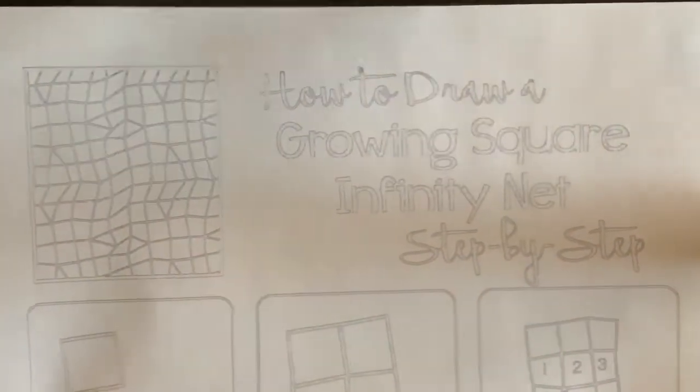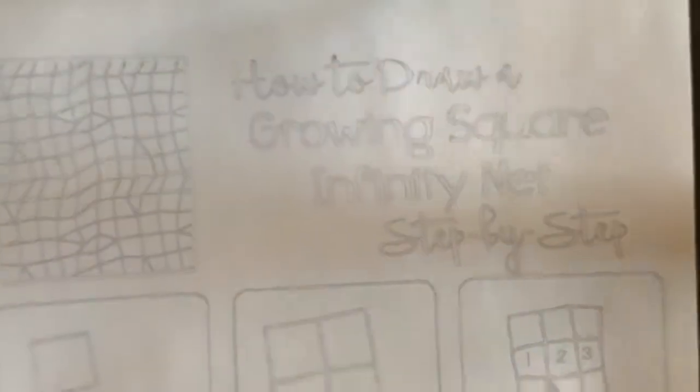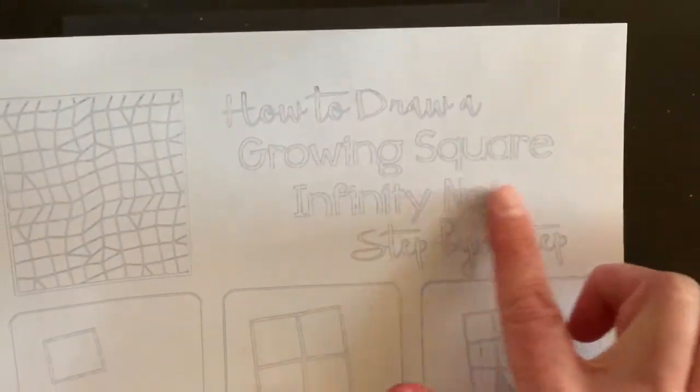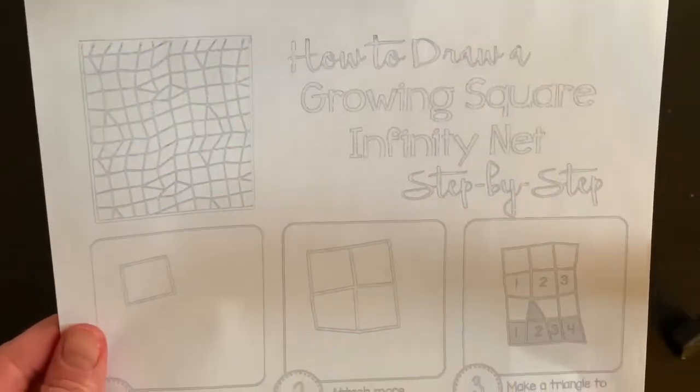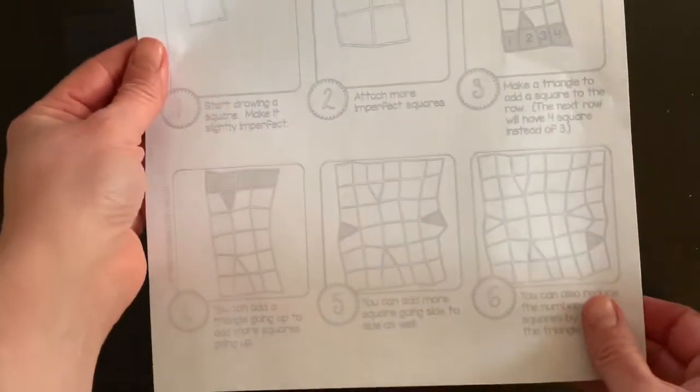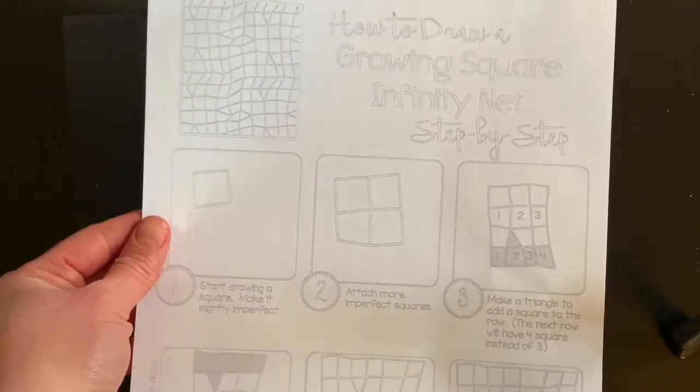This is how I draw the Yayoi infinity nets. You guys have these sheets. Oh my gosh, my printer ran out of ink at home and it's so light. I chose to do the growing square infinity net. You guys could do the triangle one or any of the other ones. I have printed and it takes you step by step how to do them. If you wanted to just try it on your own and not follow these, that's okay by me as well.